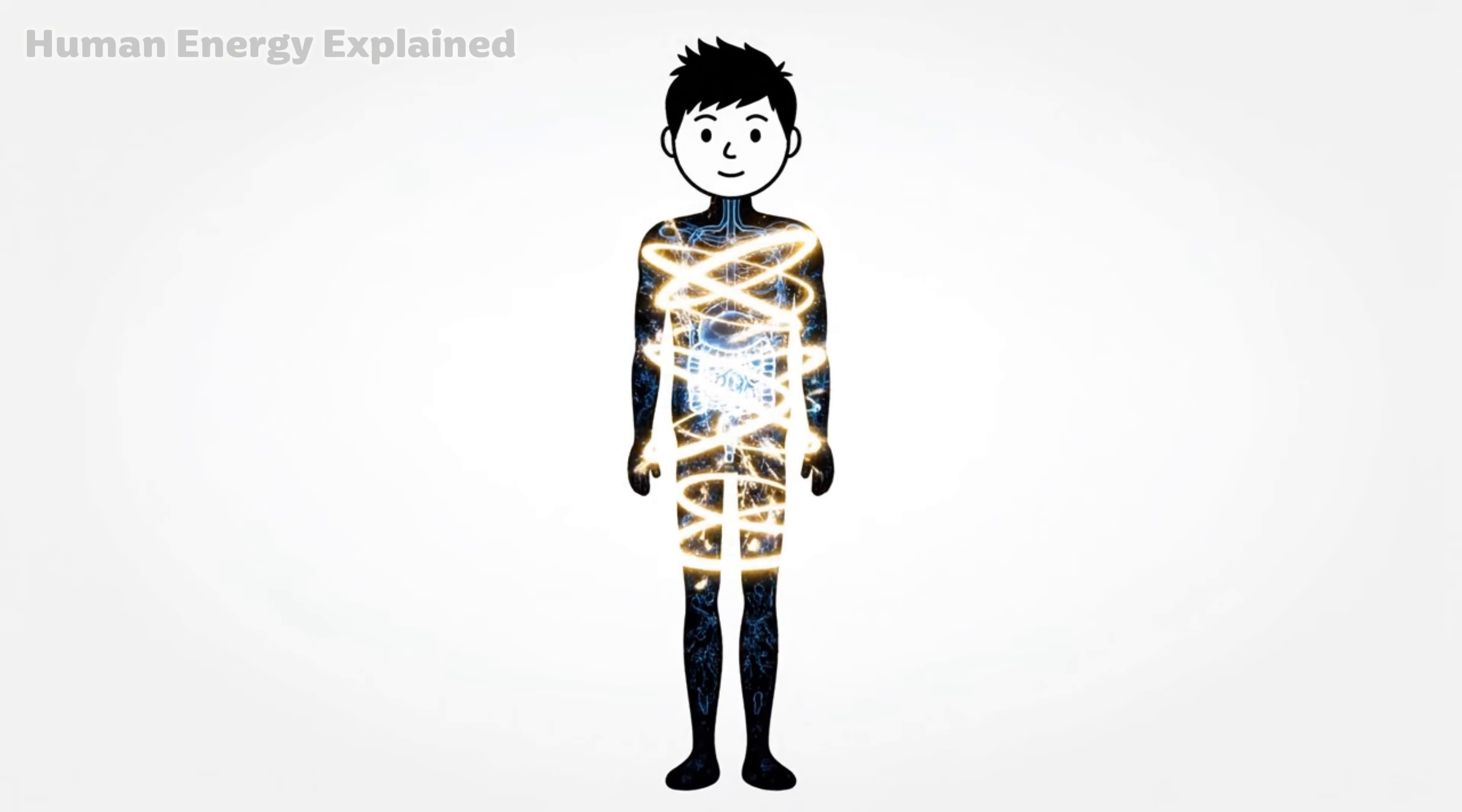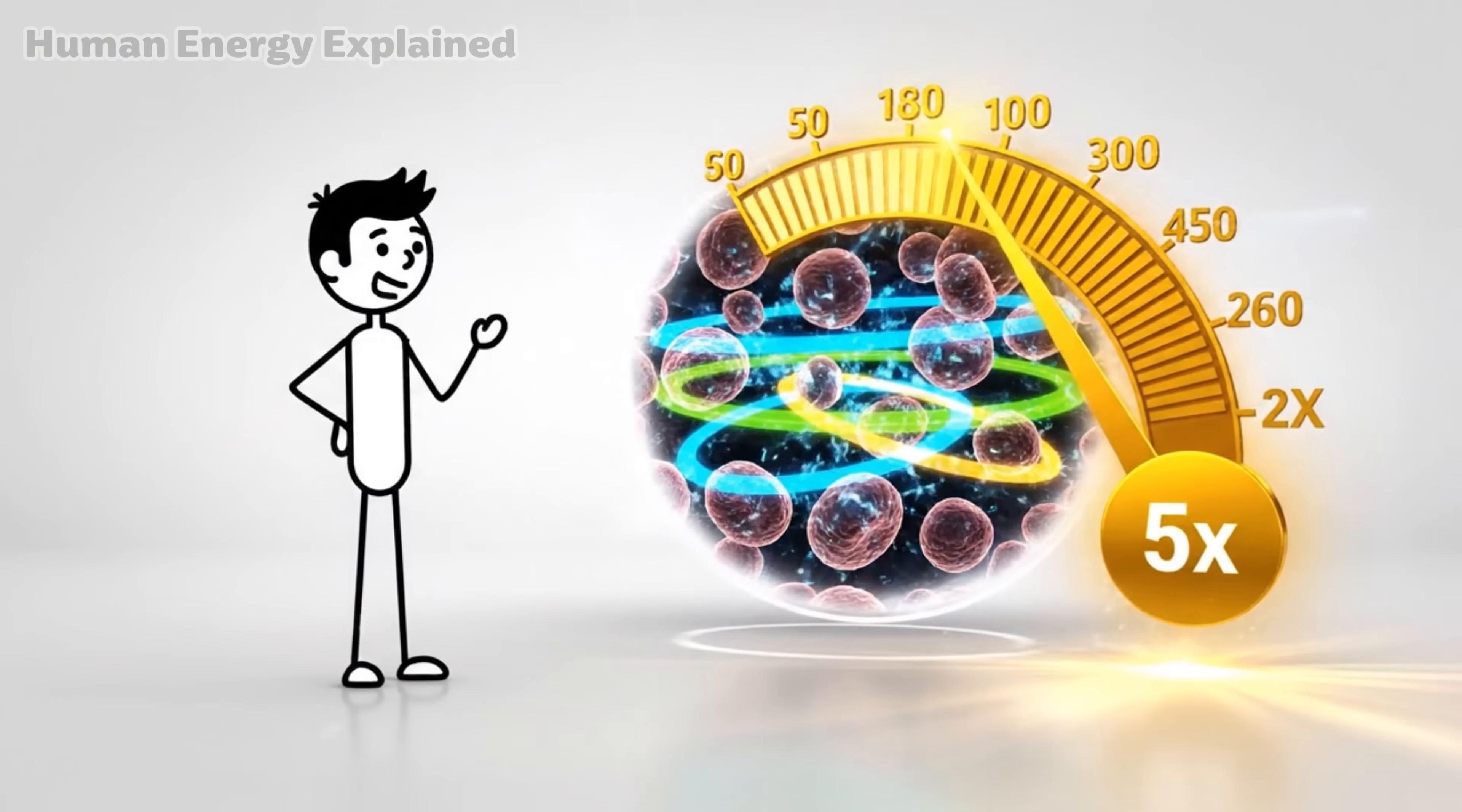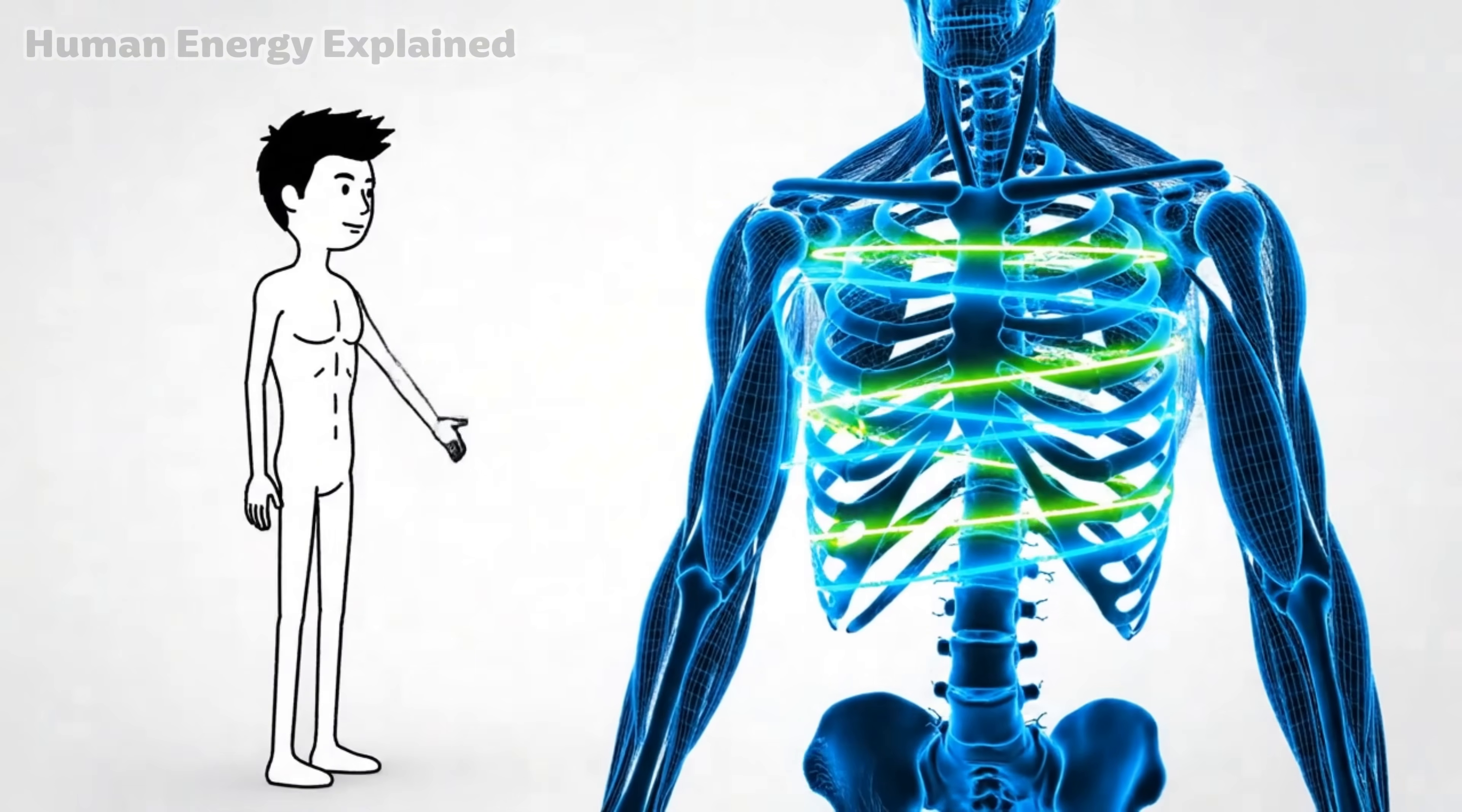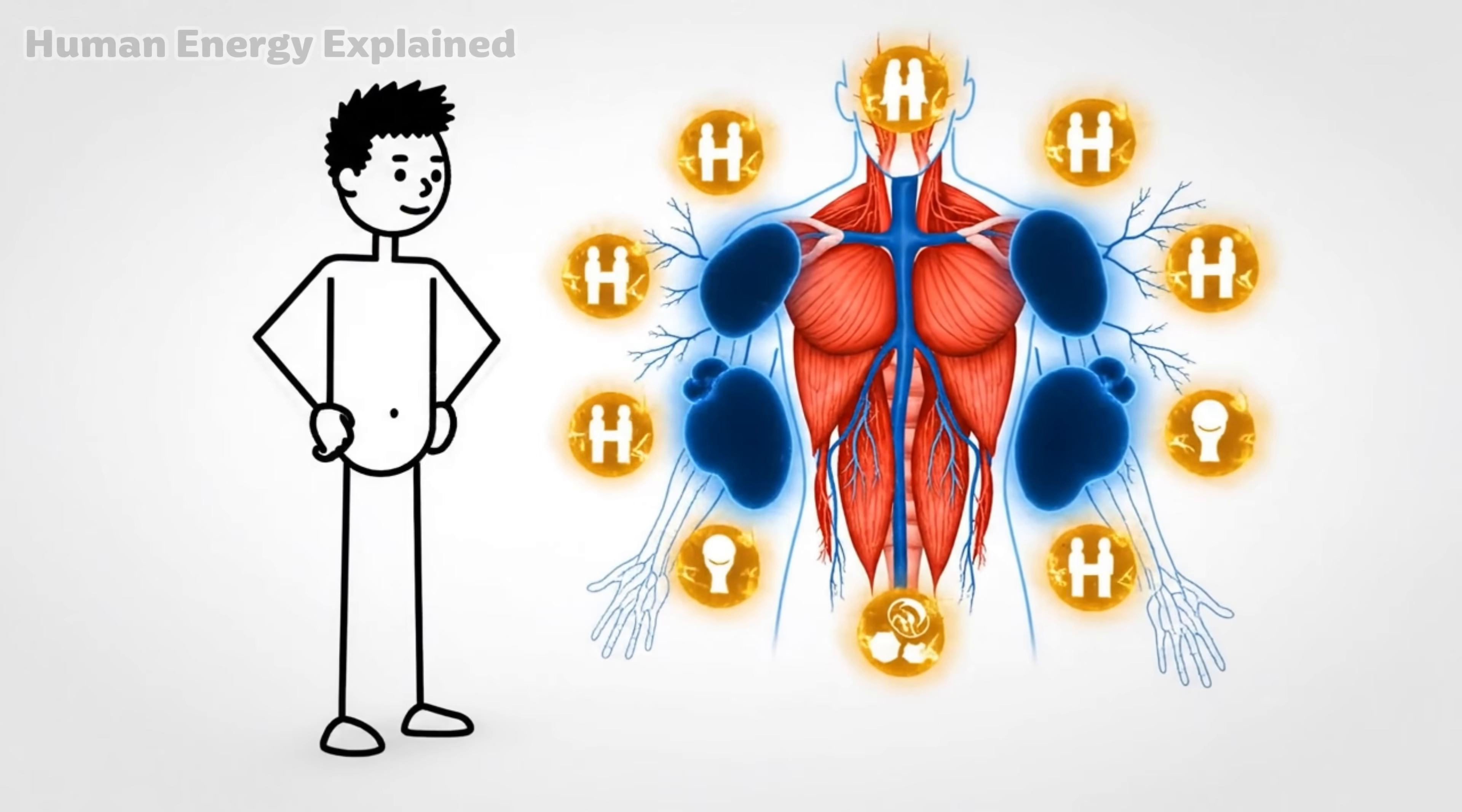It's biological housekeeping at the deepest level. And while autophagy cleans up, your hormones shift dramatically. Human growth hormone can surge up to 5 times its normal levels. This isn't about building massive muscles, it's about preservation and repair. Growth hormone protects your lean tissue while your body burns fat for fuel. You're not losing muscle, you're losing what you don't need.